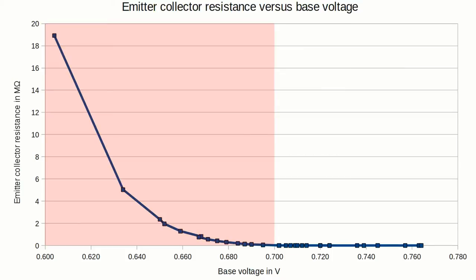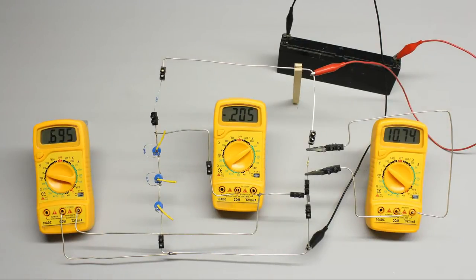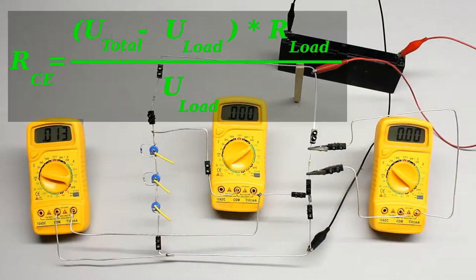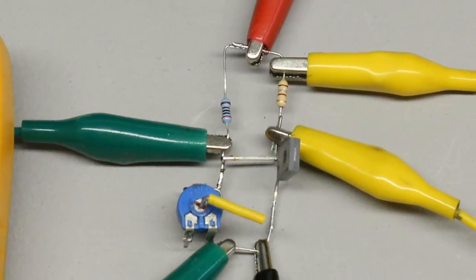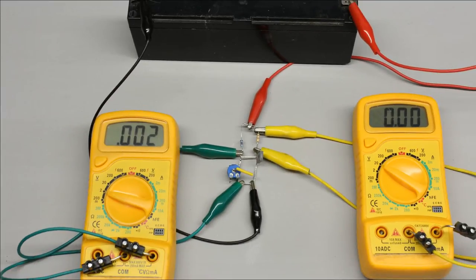As you can see, the resistance of the emitter-collector line drops from approximately 20 megaohm to below 1 kiloohm, while the base voltage increases from 0.6 to 0.7 volts. The values were recorded by altering the base voltage with potentiometers and measuring the voltage drop at the base pin and the load resistor. A battery with a nominal voltage of 12V is used as the voltage source.